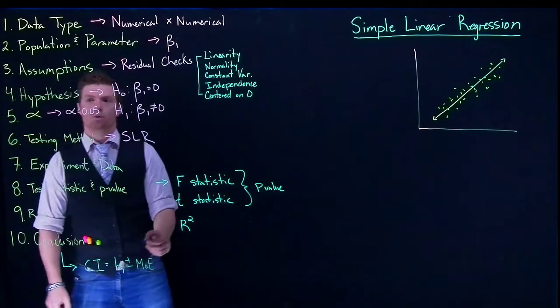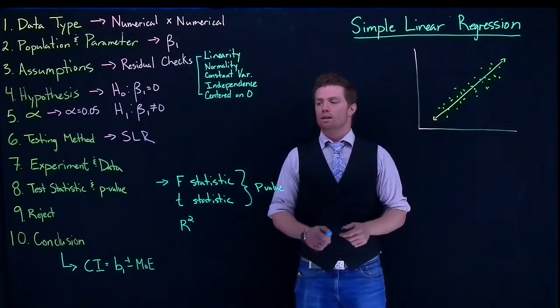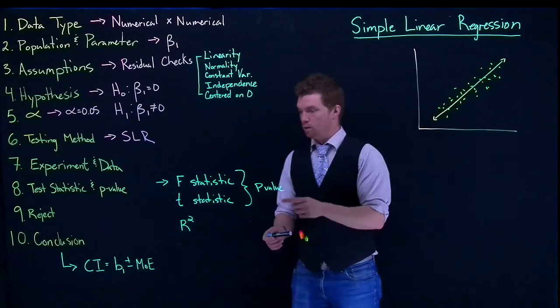If we're doing two-tailed, if we're doing one, then it'd just be plus or minus that adjusted margin of error. So from this point, where do we go?